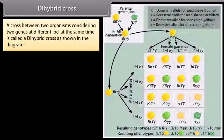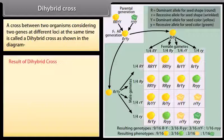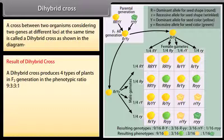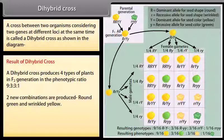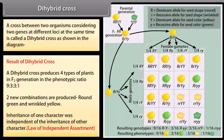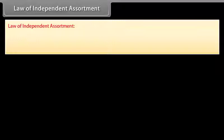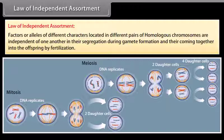Dihybrid cross. A cross between two organisms considering two genes at different loci at the same time is called a dihybrid cross. A dihybrid cross produces four types of plants in the F2 generation in a phenotypic ratio of 9:3:3:1. Two new combinations are produced — round green and wrinkled yellow — demonstrating that the inheritance of one character was independent of the other. This is the Law of Independent Assortment: factors located on different pairs of homologous chromosomes segregate independently during gamete formation and combine randomly in offspring through fertilization.